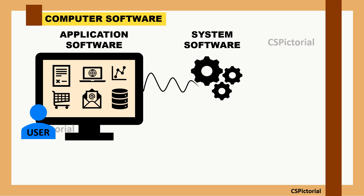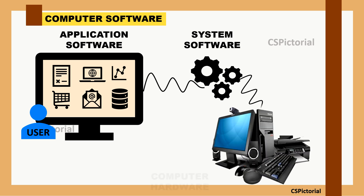System software includes highly technical programs that directly interact with the computer hardware. It acts as a bridge between the computer's hardware and the applications that we use. System software is installed by the manufacturer itself, and the computer cannot run without it.